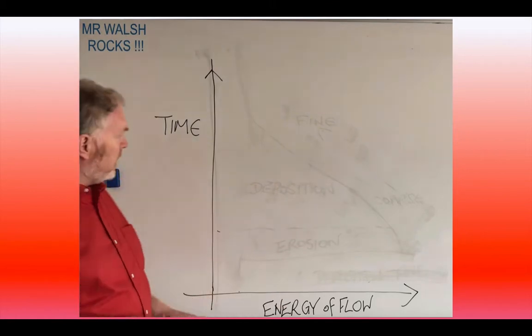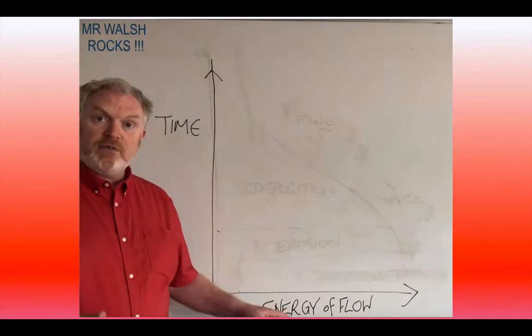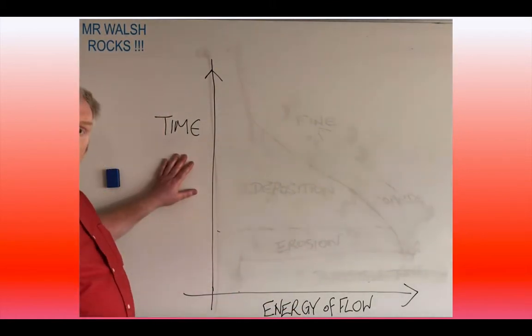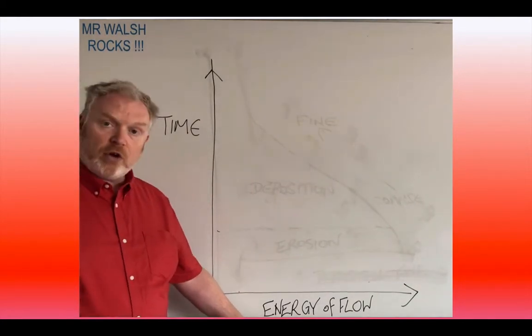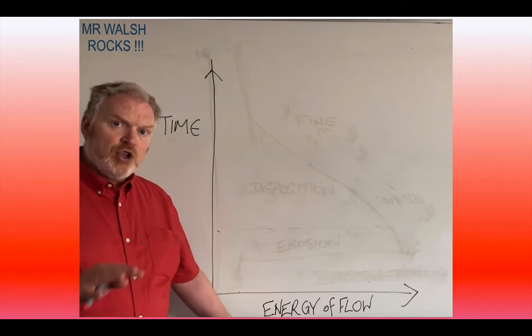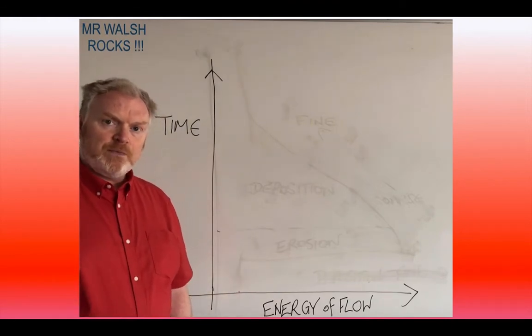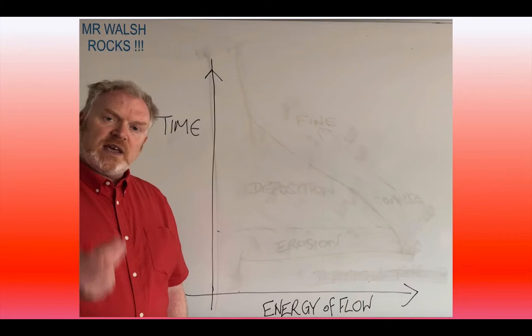What I've done here is I've plotted the axes of a graph. I've got time on my vertical axis and I've got energy of the flow on my horizontal axis. Notice there are no numbers on this. All I want to do with this is to illustrate an idea.